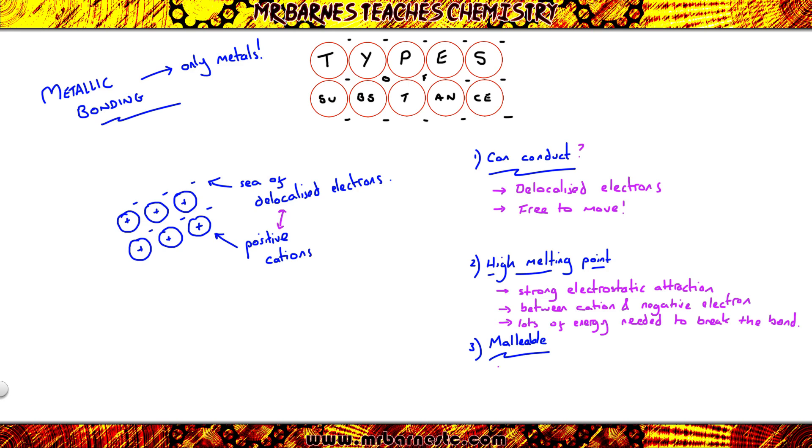And then finally, why are they malleable? Why can they be stretched into wires? This again is to do with the strong electrostatic attraction. Now because there is a strong electrostatic attraction between your cation and your negative electron, the layers can slide past each other. And what happens is the metallic bond doesn't get broken. So they'll stick together and can be hammered into shape.